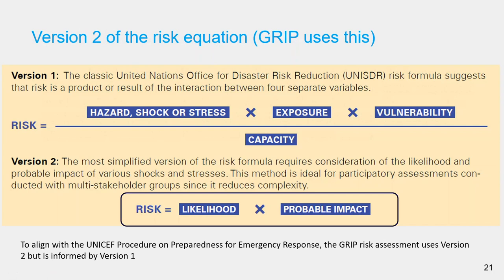Here is version 2 of the risk equation: risk equals the likelihood of a risk event multiplied by its probable impact. This is very similar to the probability multiplied by the consequence idea we encountered earlier. The GRIP document uses this version 2 predominantly.